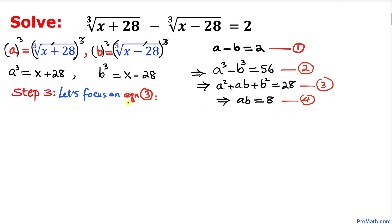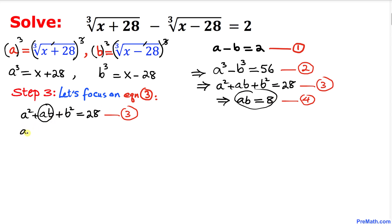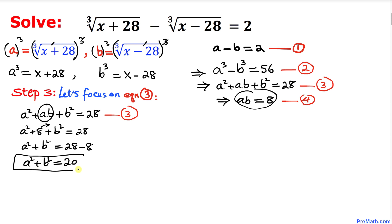Focusing on equation three: a² + ab + b² = 28. Replacing ab with 8, we get a² + 8 + b² = 28. Moving 8 to the right-hand side gives a² + b² = 20. This is equation five.